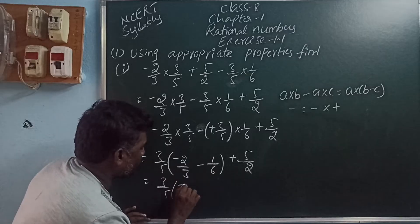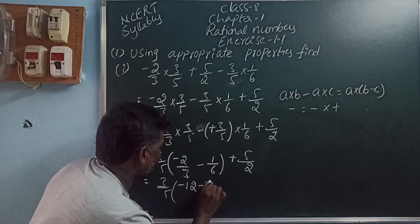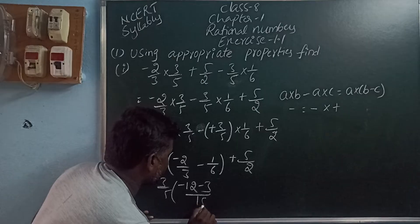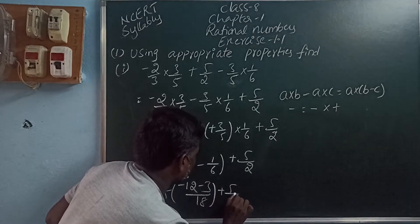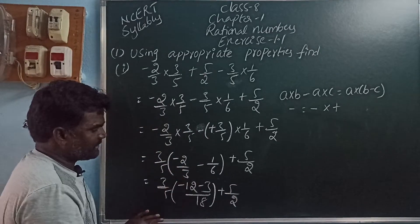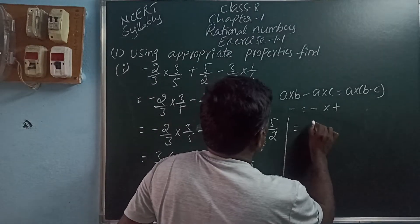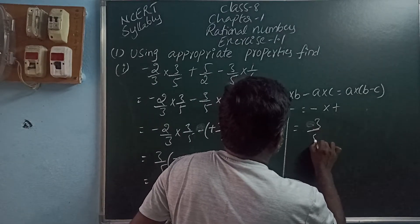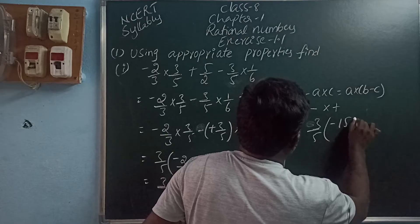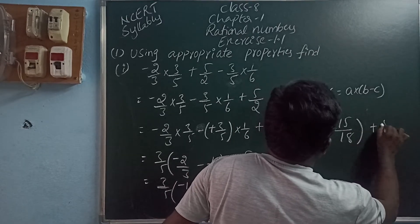These two are fractions. We can do cross multiplication. So 2 times 6 is 12. Minus 12, minus 1 into 3 is minus 3. 3 times 6 is 18, plus 5 by 2. Here, minus 12 minus 3 is minus 15. So 3 by 5 of minus 15 by 18 plus 5 by 2.